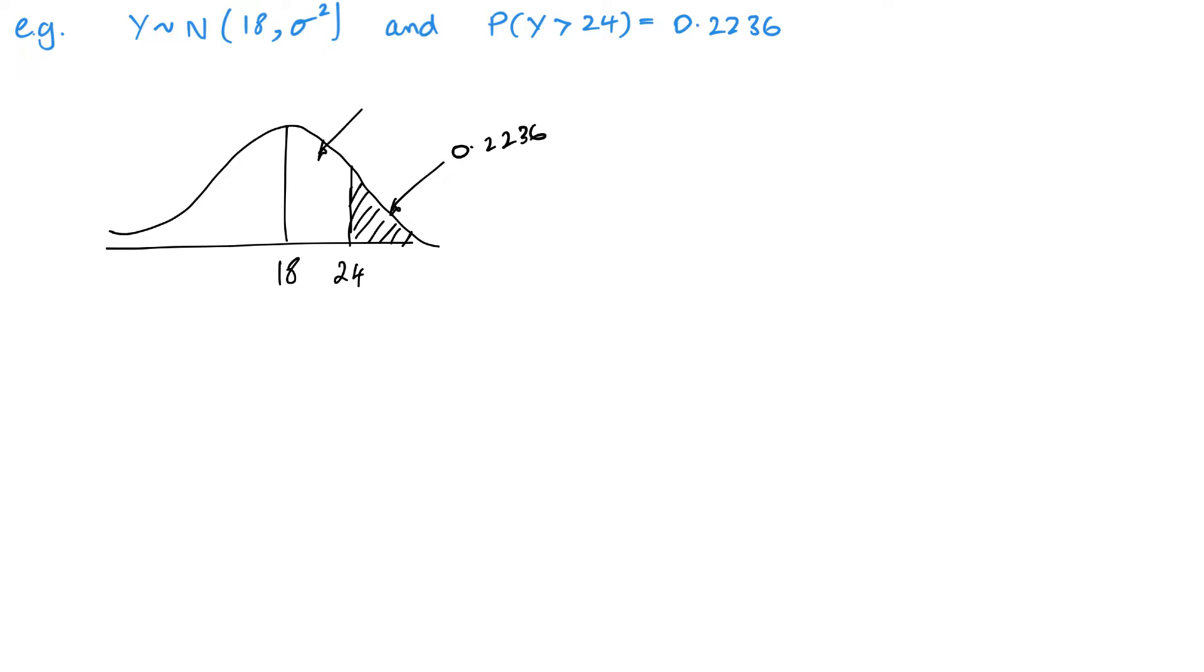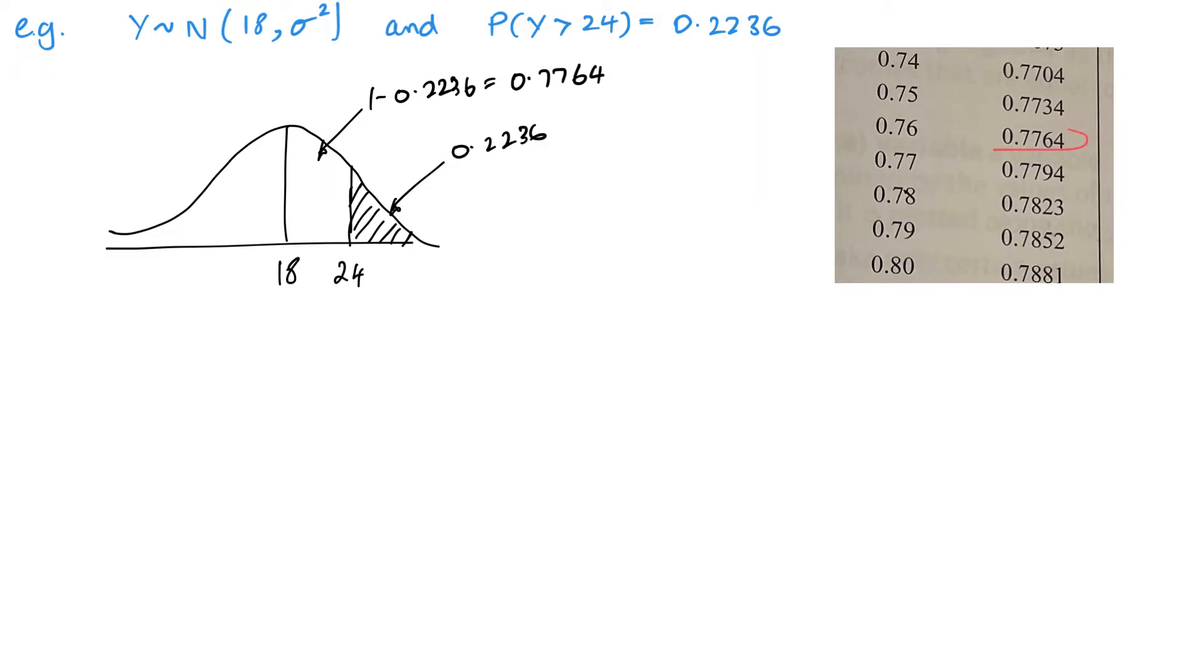So this side is going to be 1 minus 0.2236, and that's 0.7764. Just need to look that up in my tables. And here we have it, 7764. So we've got 0.76, and of course it's positive as in the right-hand side of my mean.